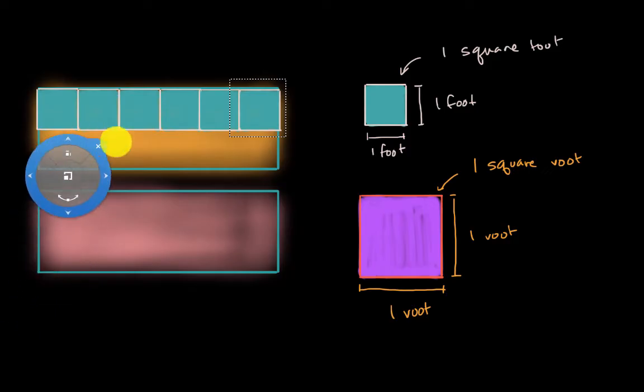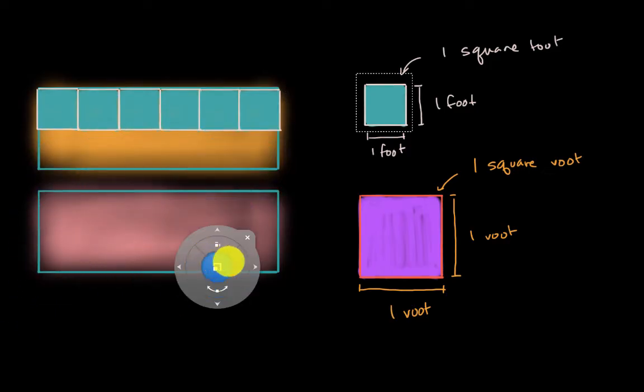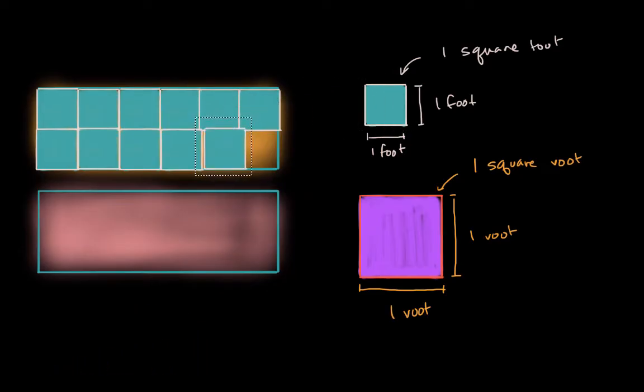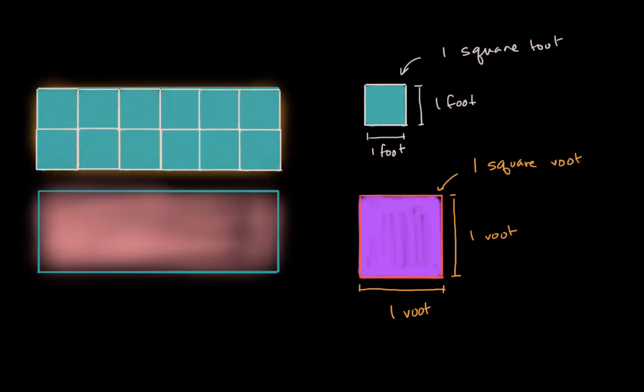And then we need another six square feet down here. So that's seven, eight, nine, ten, eleven, and twelve. When I tile these square feet onto our original rectangle, we have 12 square feet. So I could write its area as 12 square feet.